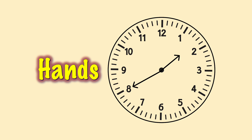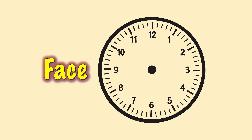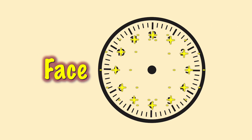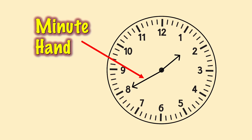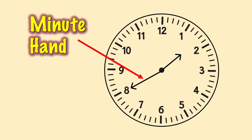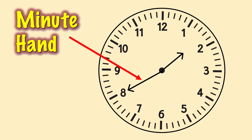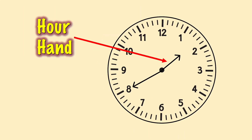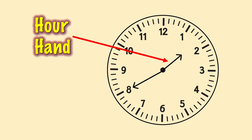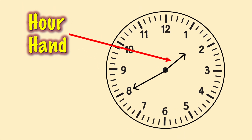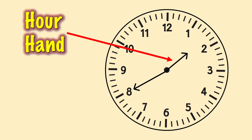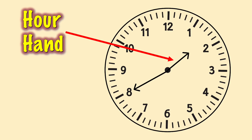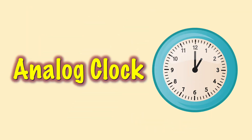The face of an analog clock is the round background with numbers. A minute hand is the long hand on the face of an analog clock — it tells us the minutes. An hour hand is the shorter hand on the face of an analog clock — it tells us the hours.